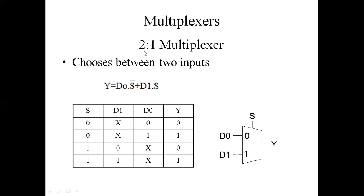Next we will look at multiplexers, starting with the 2-to-1 multiplexer. A 2-to-1 multiplexer chooses between two inputs: two inputs come in, one output comes out, and depending on the select line, one of the inputs is selected. The boolean expression is: output = D0·S̄ + D1·S. When the select line is zero, output equals D0; when select line equals one, output equals D1.